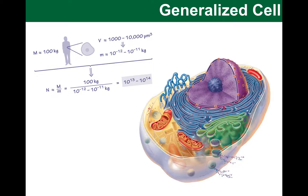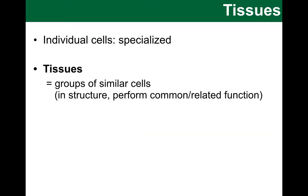So let's talk about tissues. Individual cells are specialized — we saw in the last video that there are over 200 different types of cells, and the one we looked at was just a general model. Each of these cells performs specific functions typical to that cell. Tissues are groups of similar cells in the same area, and these cells share similarity in their structure but also perform together a shared function in the body.